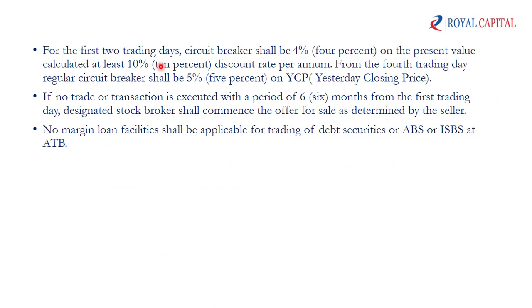In the case of debt securities, the circuit breaker on the first two days will be determined based on the recent value. From the next day, the circuit breaker will be set at 500 based on the YCP or the previous closing price.